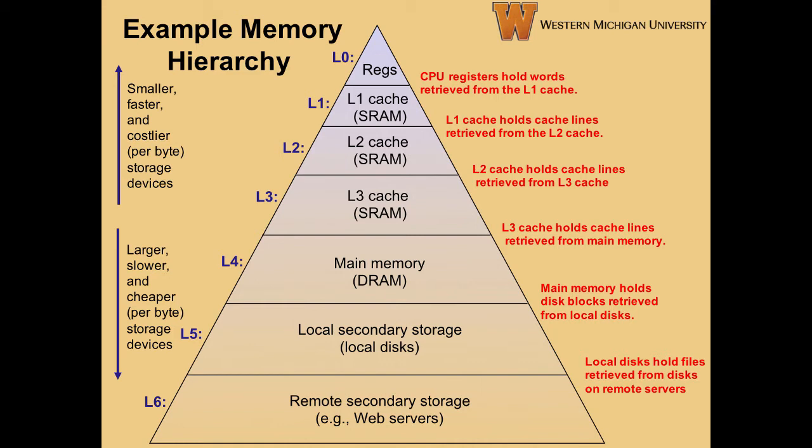Notice that there are references to cache levels right underneath the CPU registers. We'll be talking a great deal about cache memories throughout the rest of this chapter, but for now just remember the levels of the hierarchy that cache memories reside in, and that they use SRAM, or static RAM, as the physical medium, which we talked about back in video 1 from chapter 6.